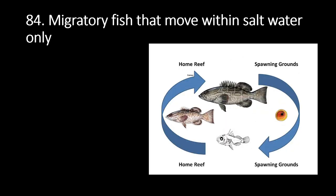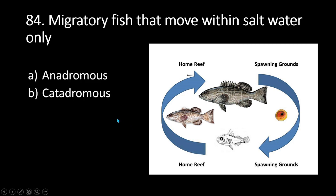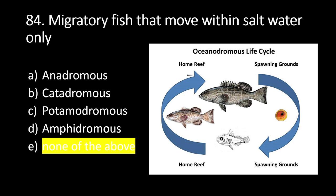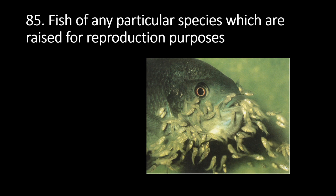Number 84: these are migratory fishes that move within salt water only. A. Anadromous, B. Catadromous, C. Potamodromous, D. Amphidromous, E. None of the above. The answer is E. None of the above, because a migratory fish that moves within salt water only is called oceanodromous fish.